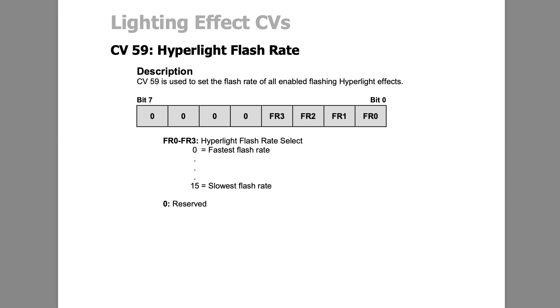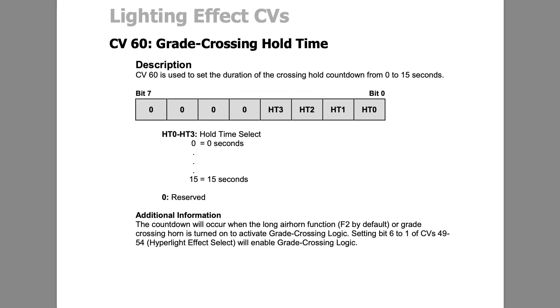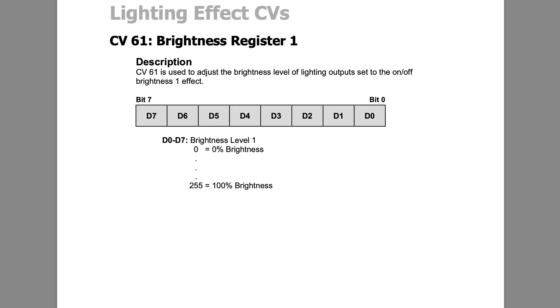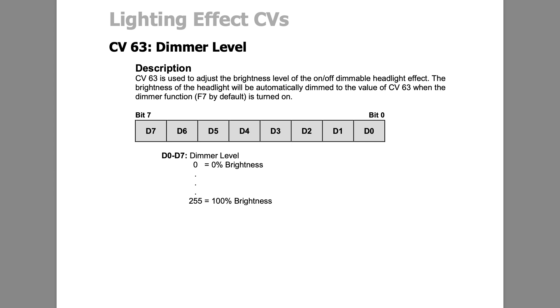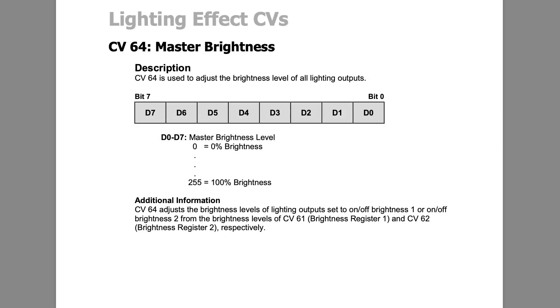CV 57 and 58 determine which lights are going to be on or illuminated in each direction — CV 57 in forward, CV 58 in reverse. CV 59 is known as the flash rate. CV 60 is called the crossing hold time, and this determines in seconds how long a lighting effect, when using crossing logic, is going to take place after you release the horn. CV 61 and 62 adjust the brilliance of the on-off dim — brilliance 1 and brilliance 2. CV 63 determines how bright the decoder is going to display the headlight when you hit F7 to dim the light. And CV 64 is what's known as the master brilliance, which takes all the lights and adjusts them evenly up or down to match the lighting effects.